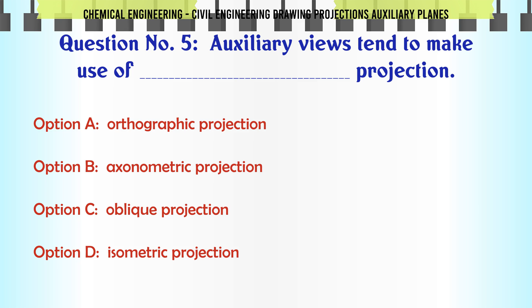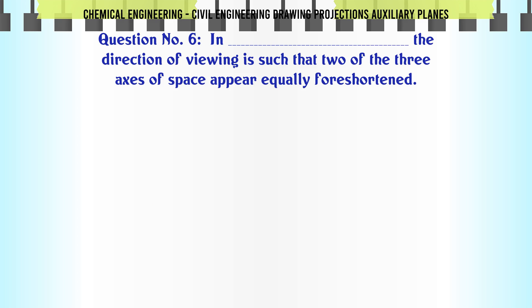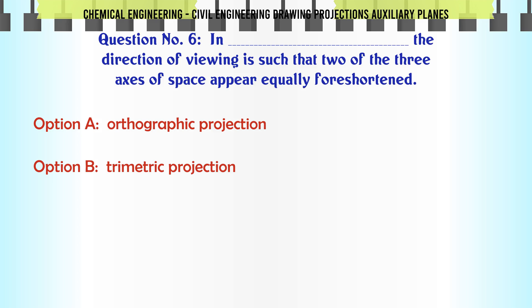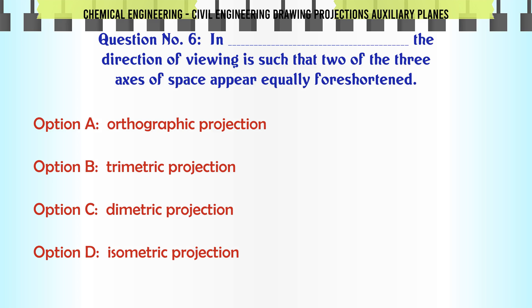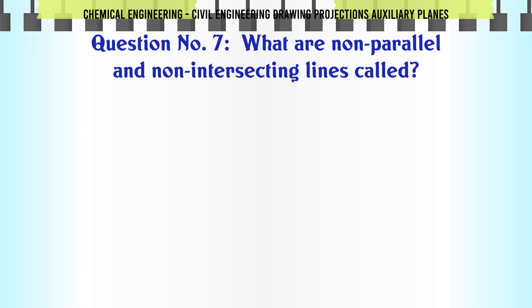Auxiliary views tend to make use of which projection? A) Orthographic projection, B) Axonometric projection, C) Oblique projection, D) Isometric projection. The correct answer is Axonometric projection. In which projection is the direction of viewing such that two of the three axes of space appear equally foreshortened? A) Orthographic projection, B) Trimetric projection, C) Dimetric projection, D) Isometric projection. The correct answer is Trimetric projection.